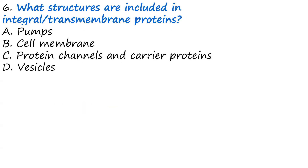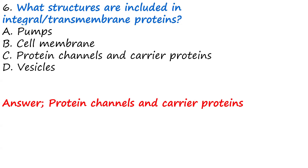Question six: What structures are included in the integral or transmembrane proteins? The options include protein channels and carrier proteins. The answer is protein channels and carrier proteins, as most integral or transmembrane proteins found in the cell membrane are in the form of protein channels and carrier proteins, which fully participate in the transport of materials across the cell membrane.